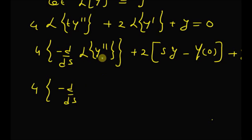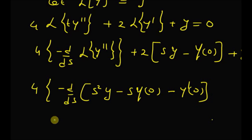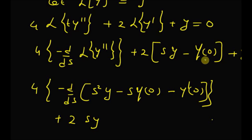From the first term, the Laplace transform of the second derivative gives s²·y − s·Y(0) − y'(0). Then we have plus 2 times [s·y − Y(0)]. The initial value of sin(√t) at t=0 is clearly 0, so we can ignore Y(0).